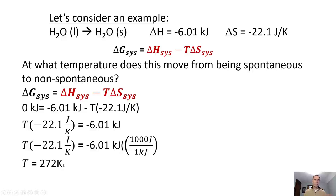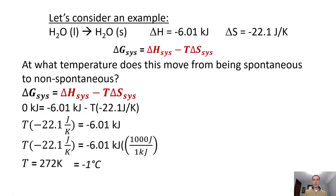After doing the algebraic rearrangement and converting kilojoules appropriately, when we solve we get 272 Kelvin. Converting to Celsius, we get minus one degree Celsius. Certainly within our error — we know it should happen at zero — so getting negative one is great.